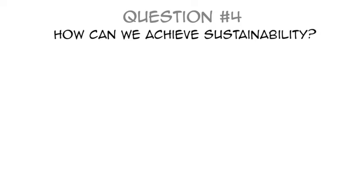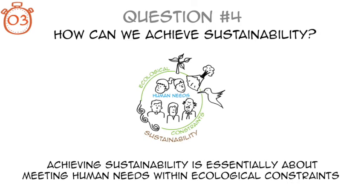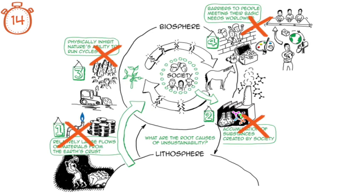Fourth question: how can we achieve sustainability? Achieving sustainability is essentially about meeting human needs within ecological constraints. Using the metaphor of the funnel, sustainability can be achieved by opening the walls of the funnel to create a resilient, fulfilling, and accessible society that can thrive within nature's limits. From a more scientific perspective, sustainability can be achieved by stopping our contribution to the four root causes of unsustainability we mentioned earlier.